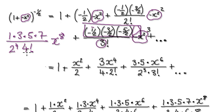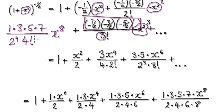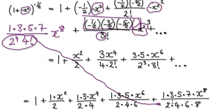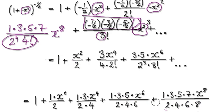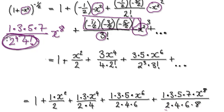Surprisingly, this thing here simplifies to 2 times 4 times 6 times 8. Surprisingly, it simplifies to that. Let's try and understand why it simplifies to this. The next ones in the pattern would be 10, 12, 14, and so on. Surprisingly, it simplifies to something simple like this. Let's try and understand why.